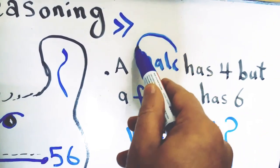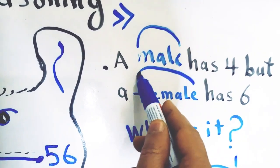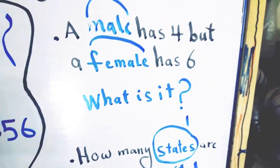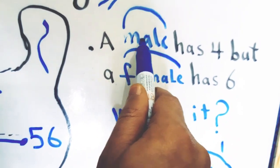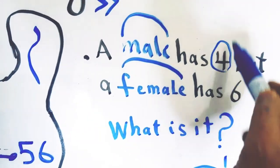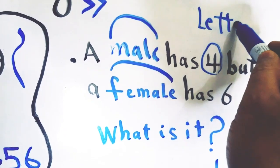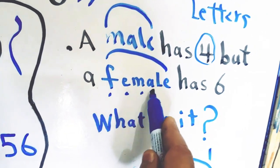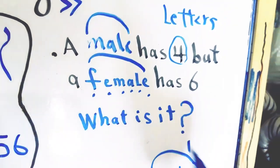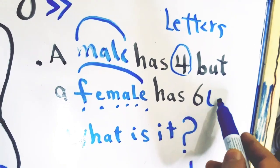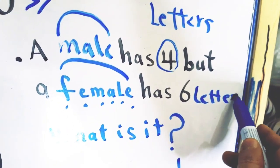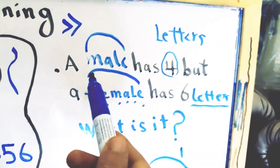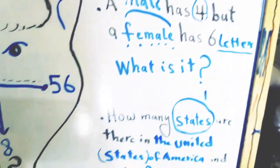Count the letters found in the word 'male': one, two, three, four — it has four letters. In the word 'female', count the letters: one, two, three, four, five, six — it has six letters. So the trick is in the number of letters found in each word.